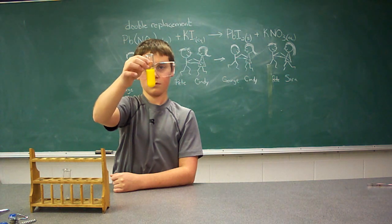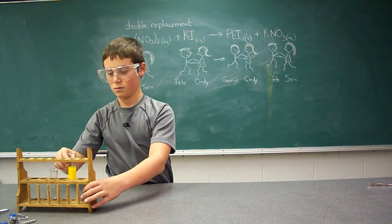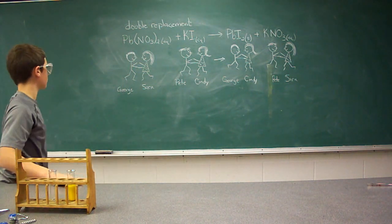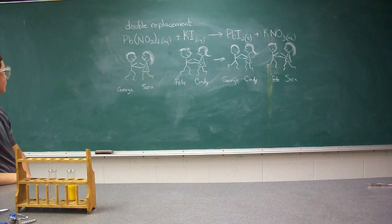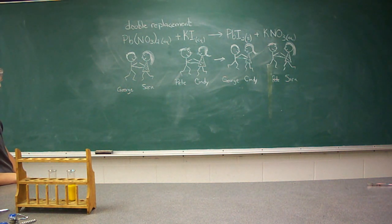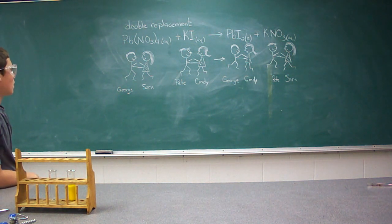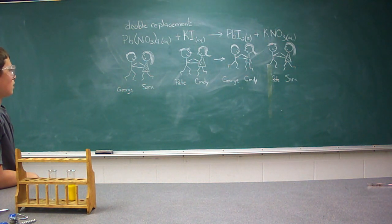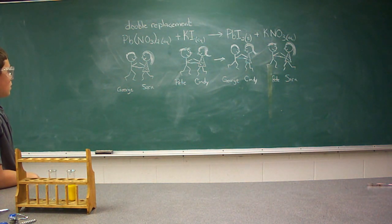One analogy we could use here is two couples dancing on the dance floor. George — represented by the lead — and Sarah, who is the nitrate, are in one ionic compound. Pete is the potassium and Cindy is the iodine. As the reaction takes place, the two cations disassociate from their respective anions and switch dance partners to create two new ionic compounds. This is an easy way to remember how cations and anions switch places.